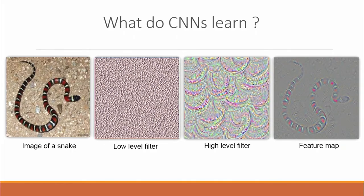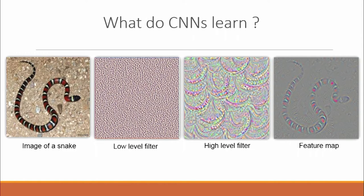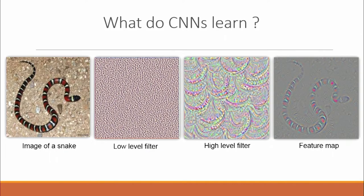When filters are stacked multiple times, they produce a convolutional architecture. Different architectures are used for different models. To understand what CNNs actually learn — here I have an image of a snake. Low-level filters, used at the beginning of the architecture, learn generic details like edge detection and shape detection. High-level filters, at the top of the stack, learn very specific details — in this case, learning the scales of a snake. After the dot product, what remains is a feature map that has rightly identified the shape as well as the scales of a snake.